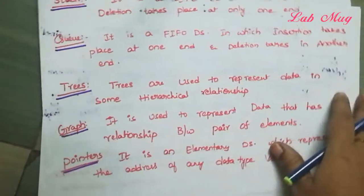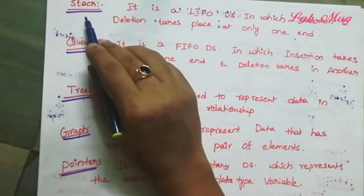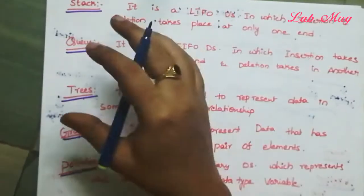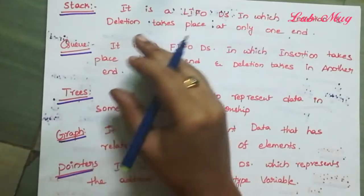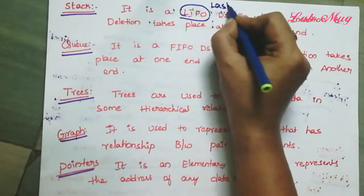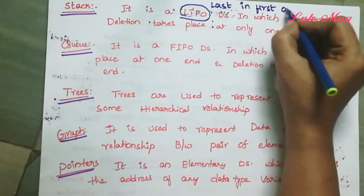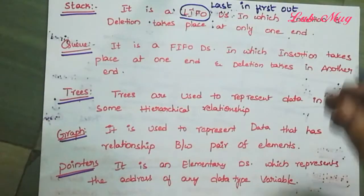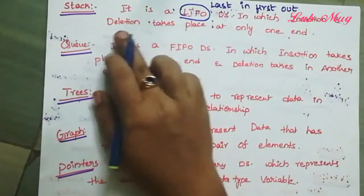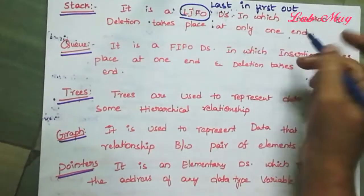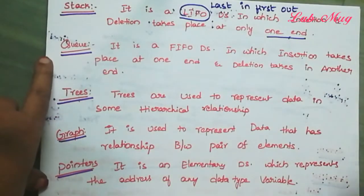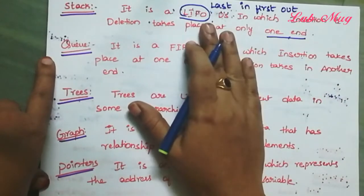Next is Stack. Stack is a linear data structure. Memory is allocated continuously. Stack follows the LIFO pattern — Last In, First Out. The last element inserted is the first one to come out. The main operations in a stack are insertion and deletion, and both are performed from one end only. Stack follows the LIFO pattern.